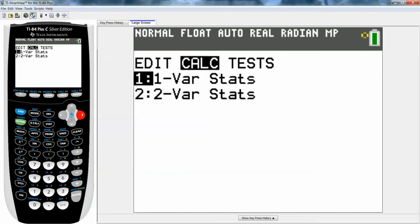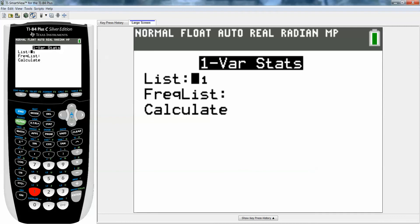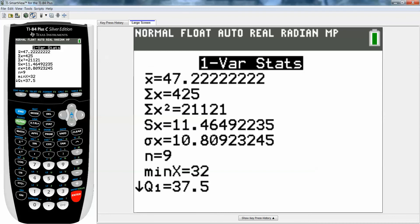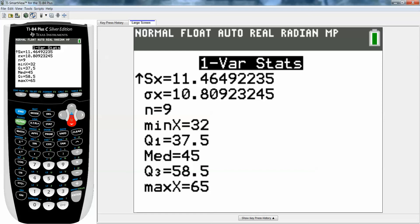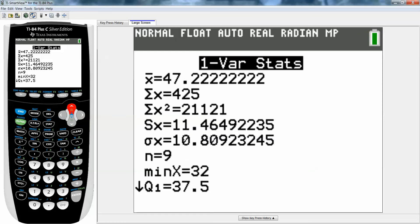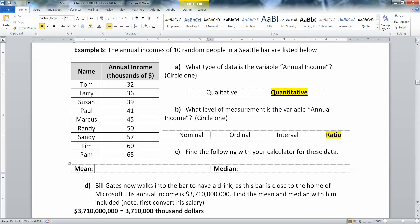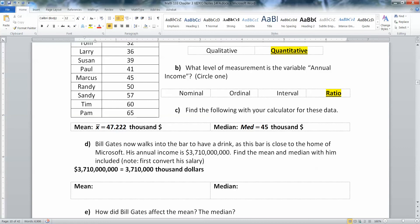So now I'm going to press stat, calculate, pick number one, one variable stat. But instead of list L1, I want to tell it L2 which is above the 2 button. So second 2, that's where my data are. And then frequency list, nothing. And then calculate, enter. And there are all the numbers. The median is 45. So the median is 45 and the mean was 47.222. So we have 47.222 thousand dollars and then we have 45 thousand dollars. Either put the dollar sign in front of 47 or at the very end. One way or another you have to delineate what your monetary unit is here.